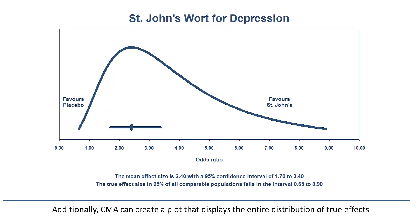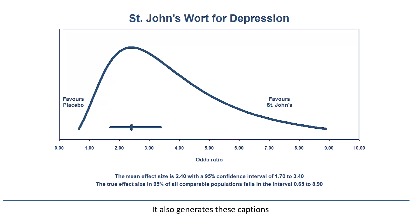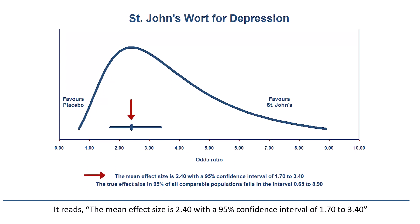Additionally, CMA can create a plot that displays the entire distribution of true effects. It also generates captions. This caption corresponds to this line. It reads: the mean effect size is 2.4, with a 95% confidence interval of 1.7 to 3.4.